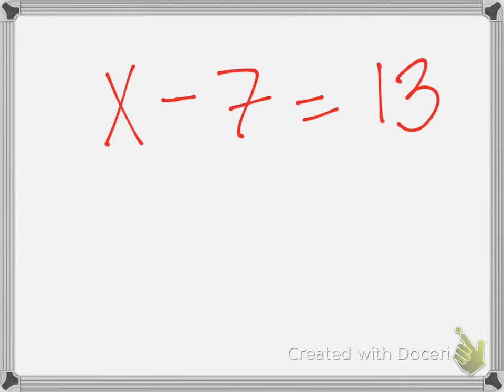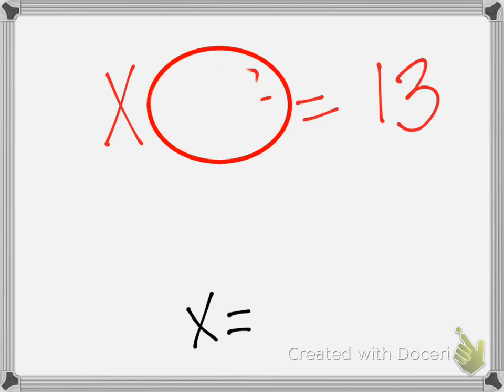I want you guys to show your work and do this problem. What do I want at the end? I want my variable to be isolated, so I want it to be x equals. What is standing in the way of that being an x equals? Yes, the negative 7. If I make that negative 7 go away, I'm just left with x equals.